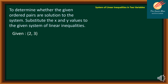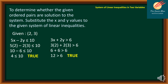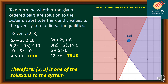To verify solutions, substitute x and y values into both inequalities. For the point (2, 3): in 5x minus 2y ≤ 10, we get 5(2) minus 2(3) = 10 minus 6 = 4, which is less than or equal to 10 — true. In 3x + 2y > 6, we get 6 + 6 = 12, which is greater than 6 — true. So (2, 3) is one of the solutions, as confirmed by its position in the overlapping region on the graph.